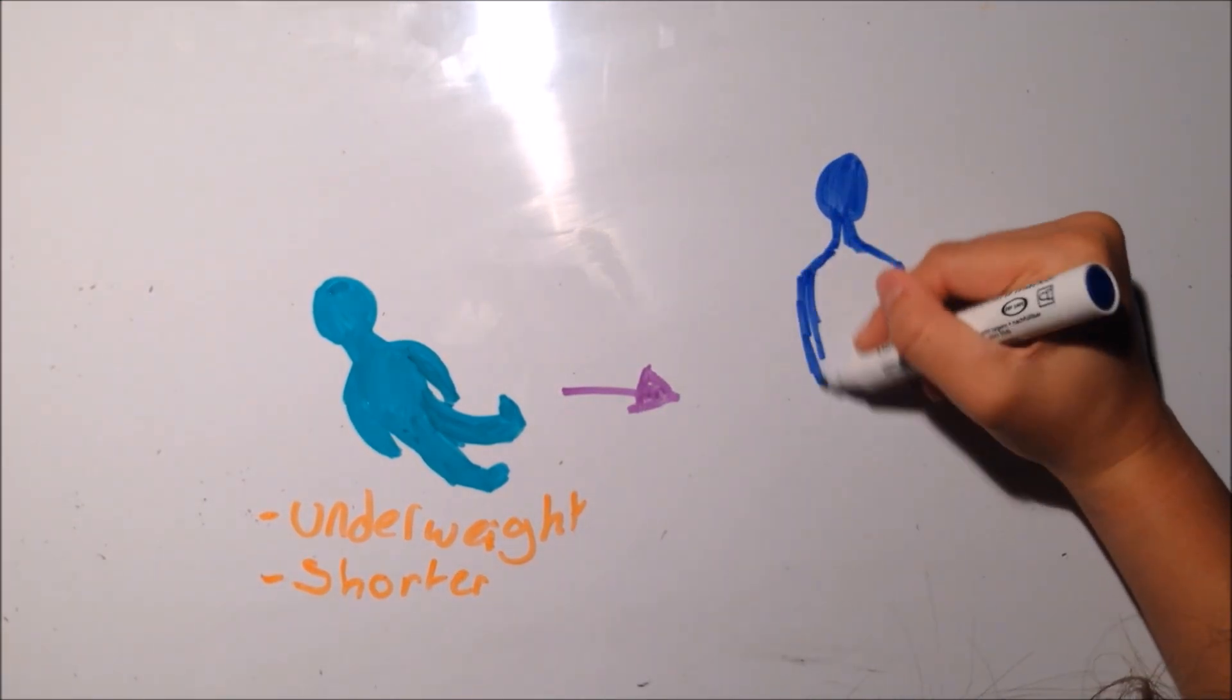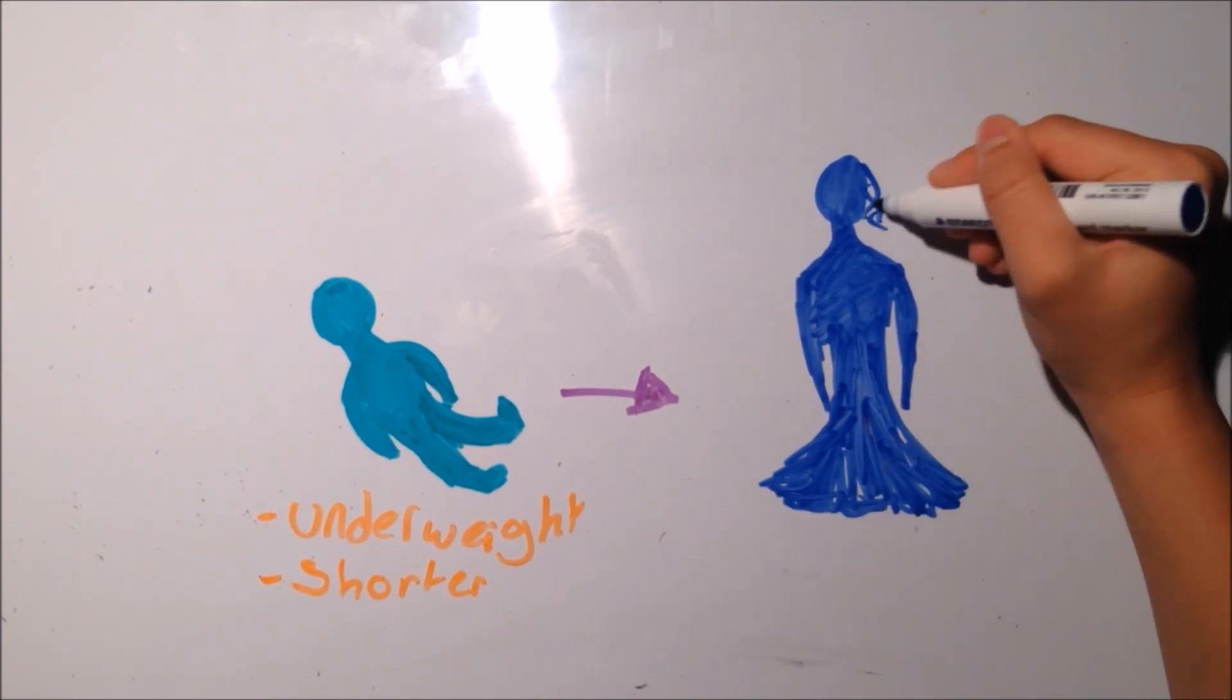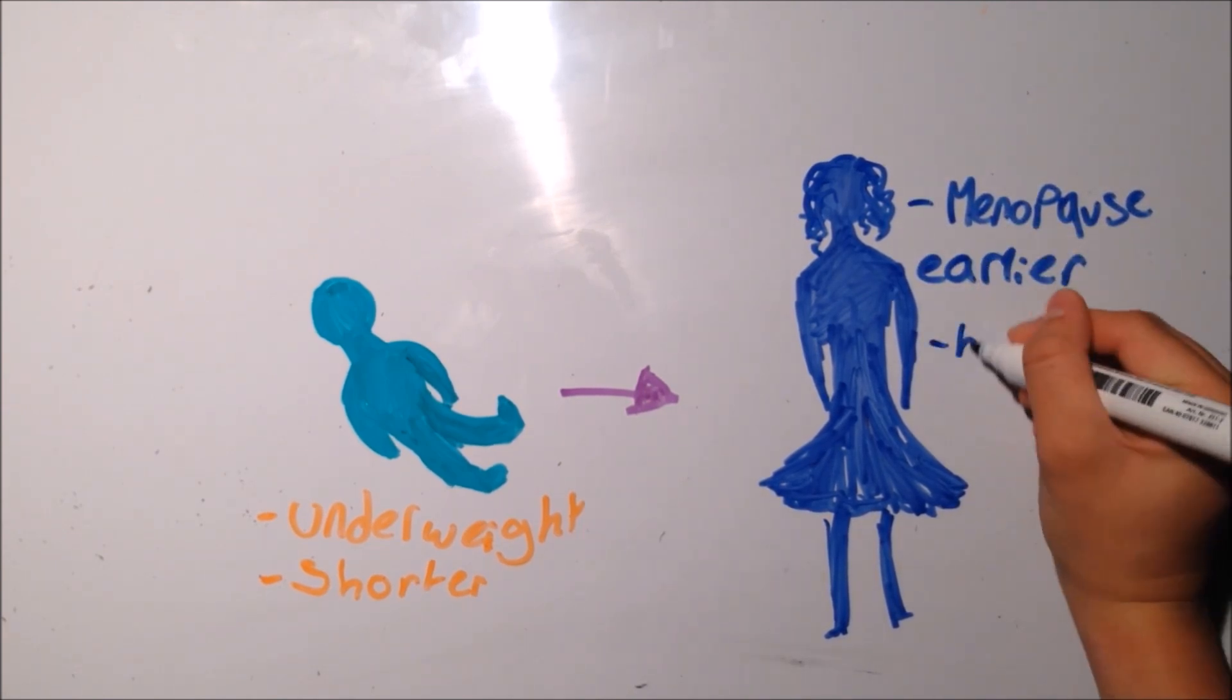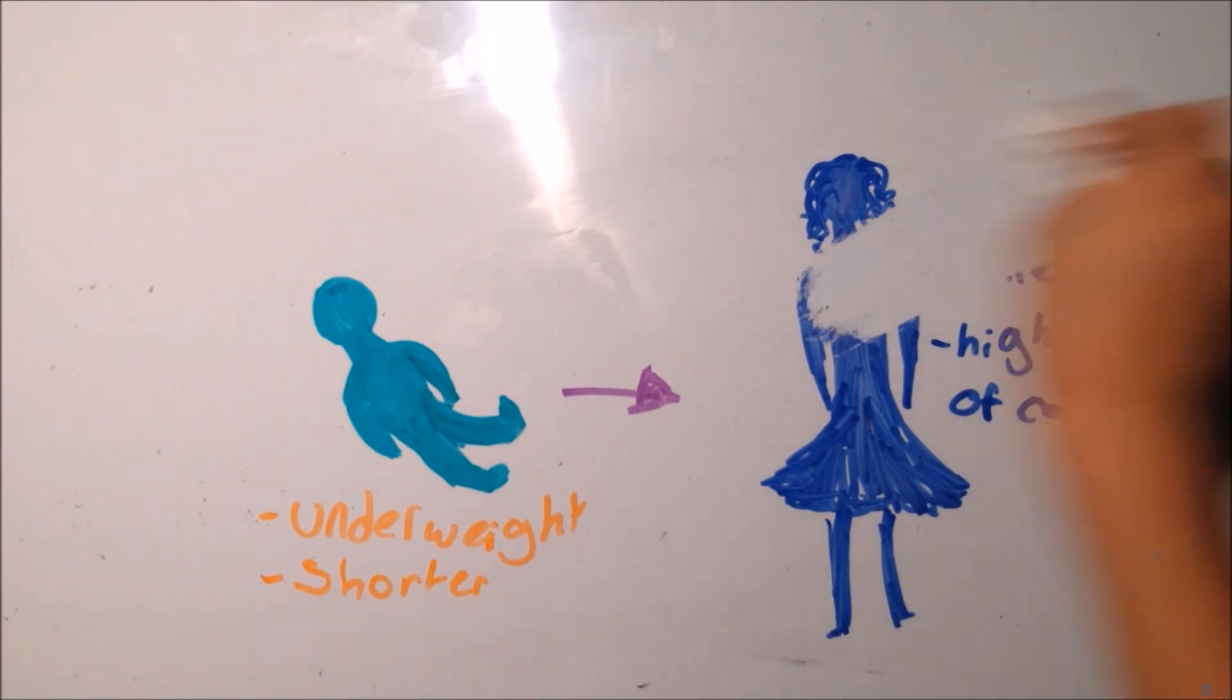Since it is a genetic mutation, this condition stays with the patient throughout his or her life with other signs developing later in life. Females hit menopause at an earlier age and there is a much higher chance of getting cancer at a lot younger age.